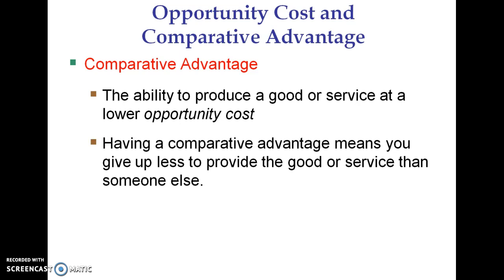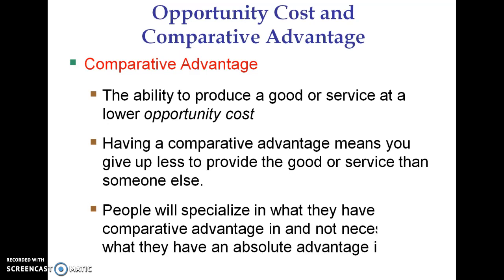Having a comparative advantage means you are not necessarily the best at doing something, but you're giving up less. Because it costs you less, you're able to do it at a lower price than someone else — and that's your advantage. Lower cost equals lower price. People will specialize in what they have a comparative advantage in, not necessarily an absolute advantage. Nations should specialize not in what they're the best at producing, but in what costs them less — where they have a lower opportunity cost.